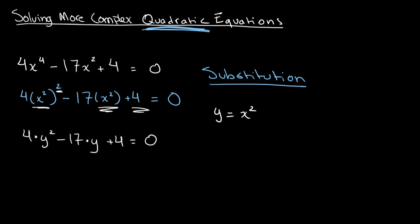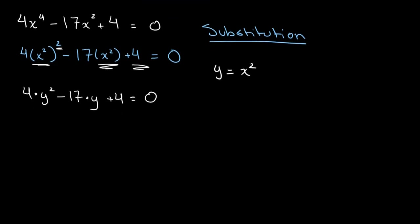Now all of a sudden this is in a format that we're much more familiar with, and we can easily solve it by just factoring. So now let's solve this. 4 times 4 is 16, so we can split 17 into 16 and 1. That gives us 4y squared minus 16y minus y plus 4 is equal to 0.